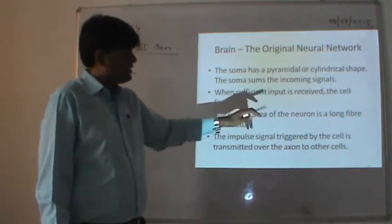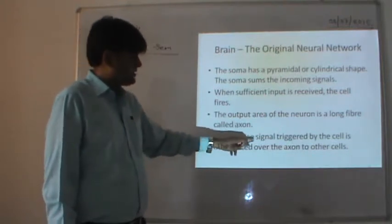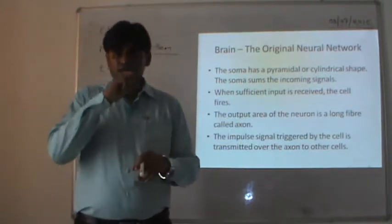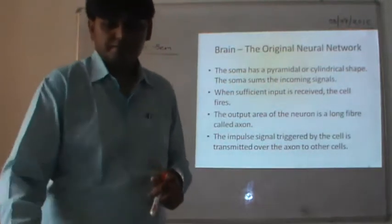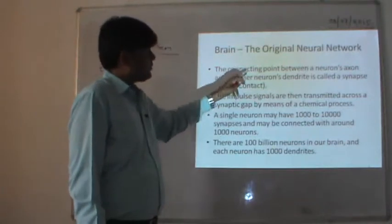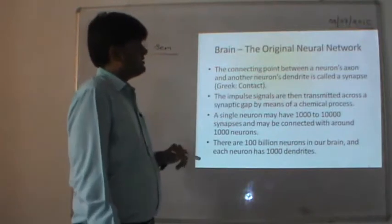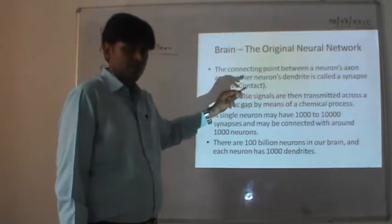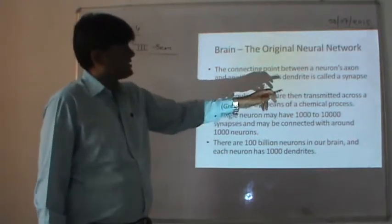The output area of the neuron is a long fiber called an axon. The impulse signal triggered by the cell is transmitted over the axon to other cells. From the axon, the output signal is transmitted to other nerve cells in the brain. The connecting point between a neuron's axon and another neuron's dendrite is called a synapse — a Greek word whose meaning is 'contact.' Neurons are connected to each other by means of a synapse.